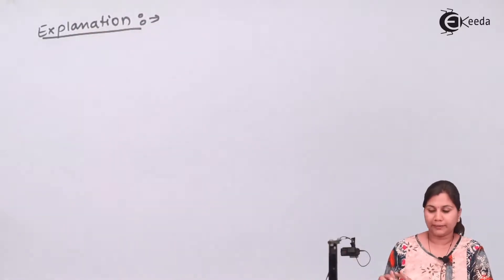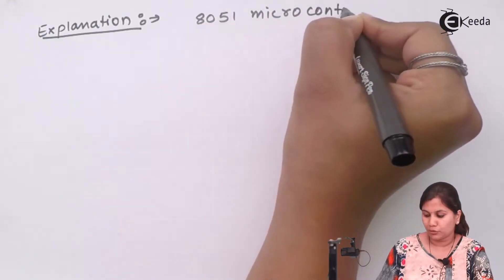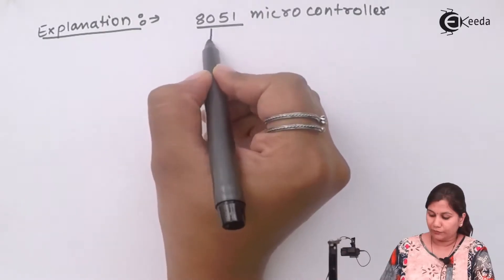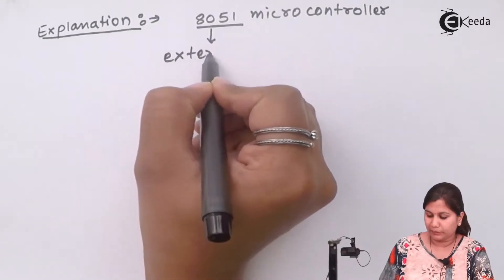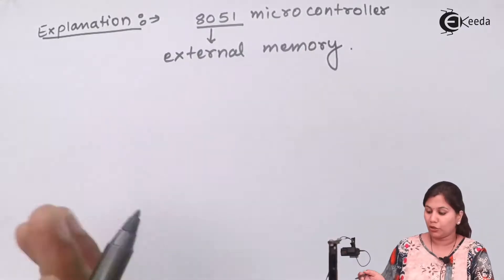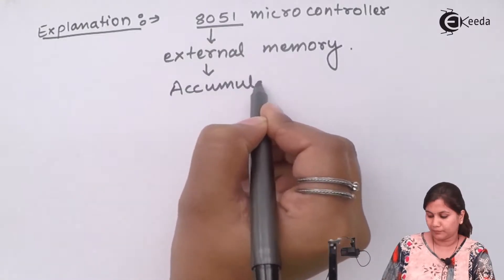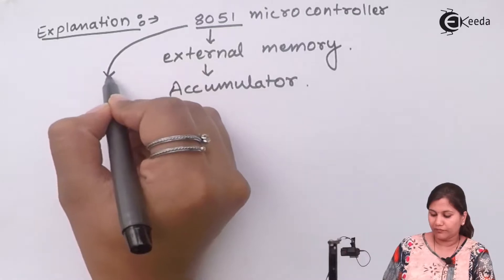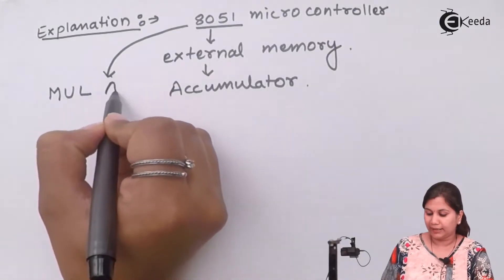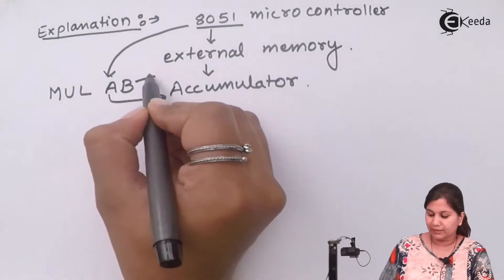Because we are writing the program using assembly language of the 8051, we will use instructions from its instruction set. In 8051, if we want to use external memory, the numbers must first be brought into the accumulator. There is a multiplication instruction called MUL AB, where A is the accumulator and B is register B.